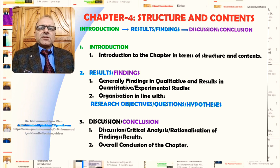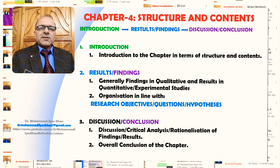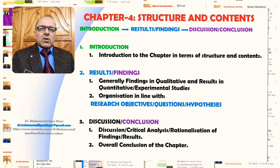To summarize, Chapter 4 is one of the most important chapters of a research thesis, mainly because it represents what we have structured and conducted the whole research process for — the fruit of the entire process. It is therefore very important to organize this chapter well. There should be an introduction, followed by results and findings organized in line with research objectives, and the findings and results should reflect responses to research questions or answers in response to research hypotheses.